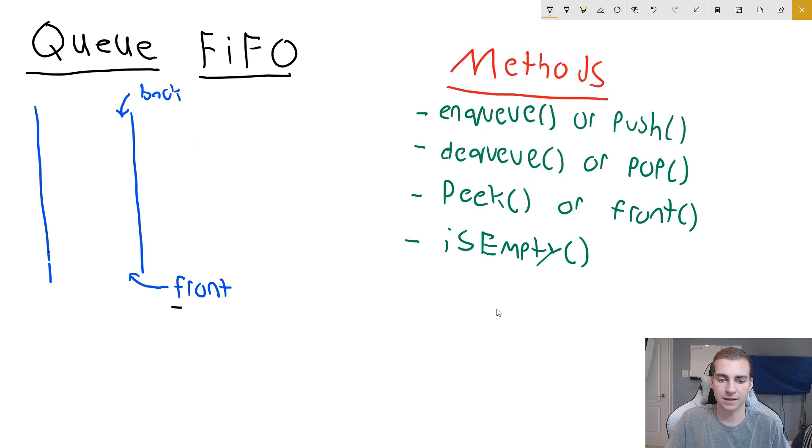So our queue has what's known as a front and a back. And when you first come into the queue, you come in from the backside. This is the exact same way that a line works. When you enter a line, you come in from the backside, then you go behind all the other people that are closer to the front. And eventually, once you get to the end, it's your turn and then you get to do whatever it is that you want to do.